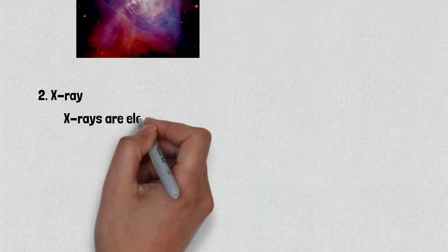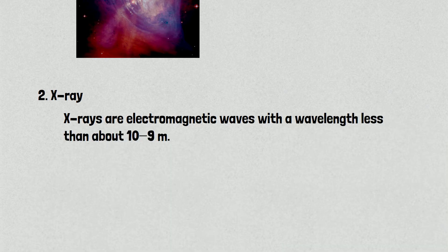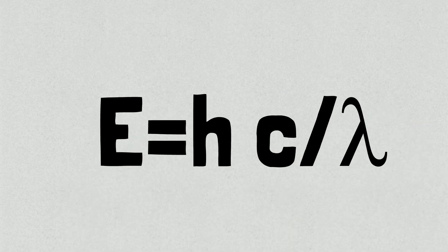Number two is x-ray. X-rays are electromagnetic waves with a wavelength less than about 10 to the power of minus 9 meters. A smaller wavelength corresponds to higher energy according to the equation E equals hc over lambda.